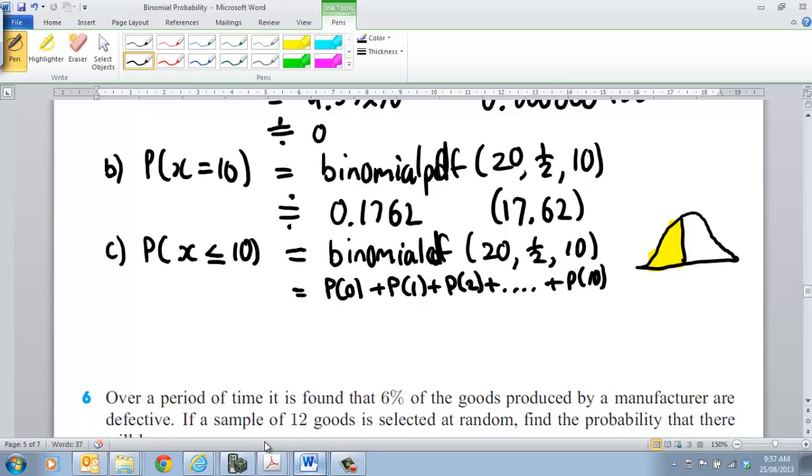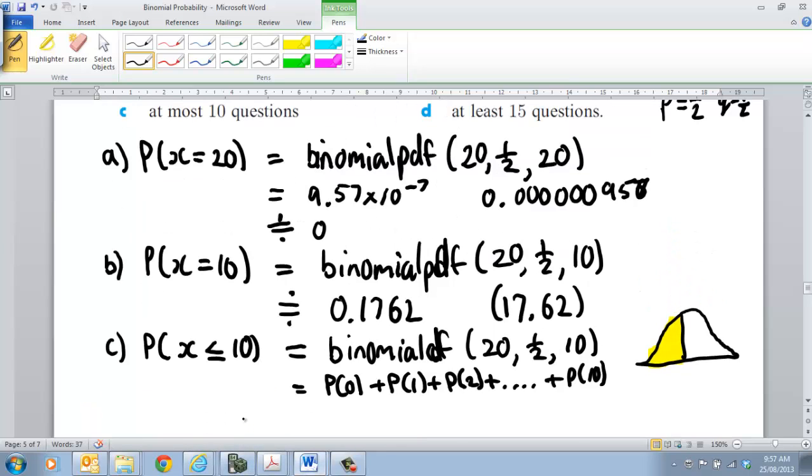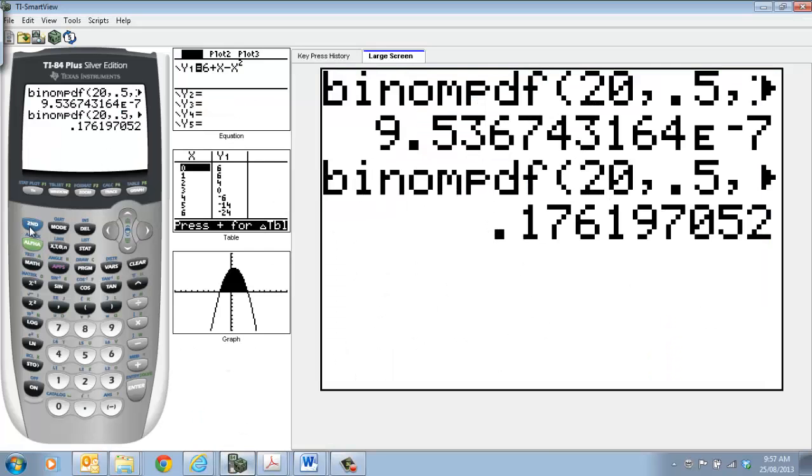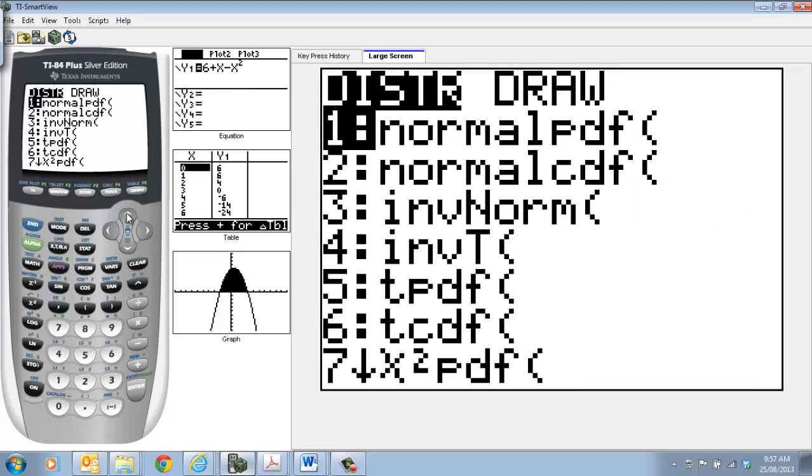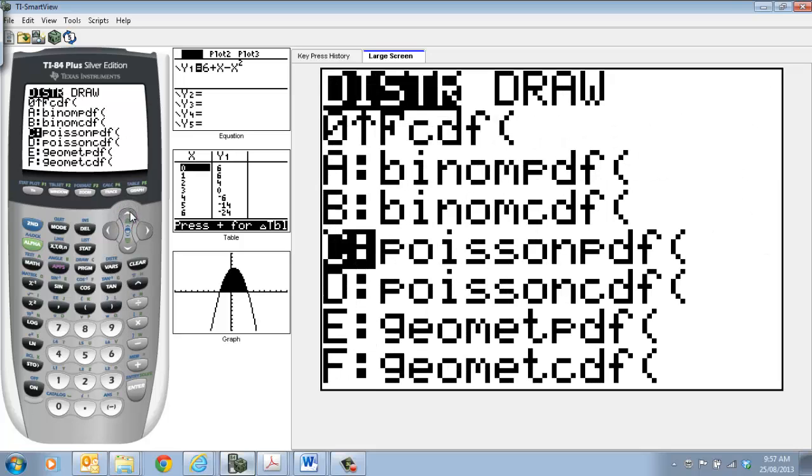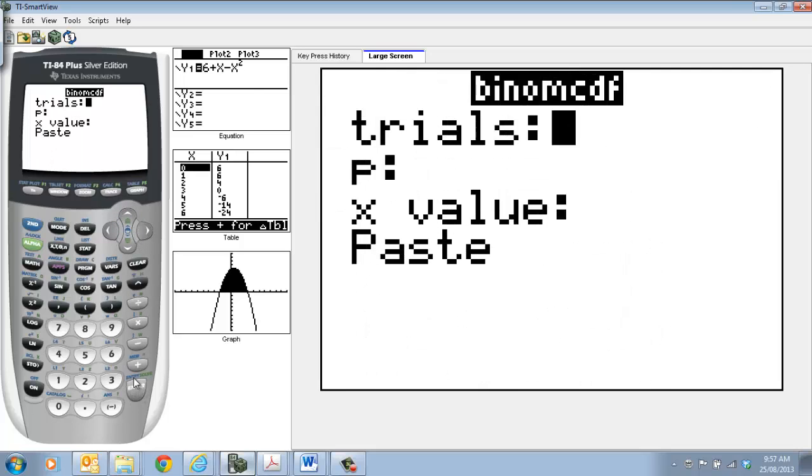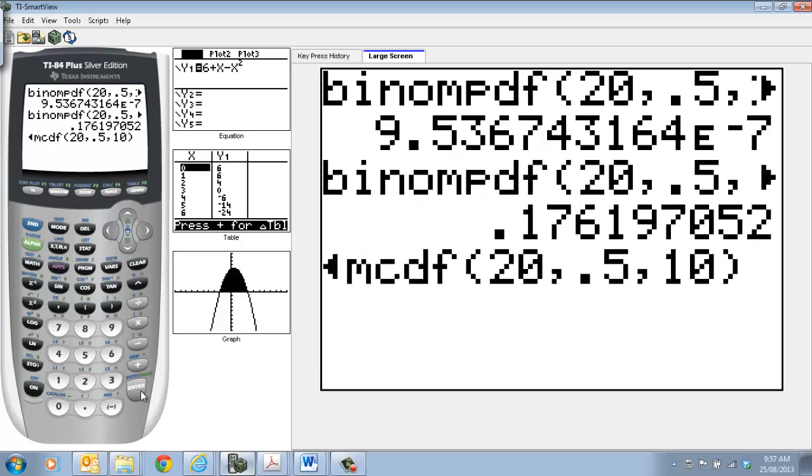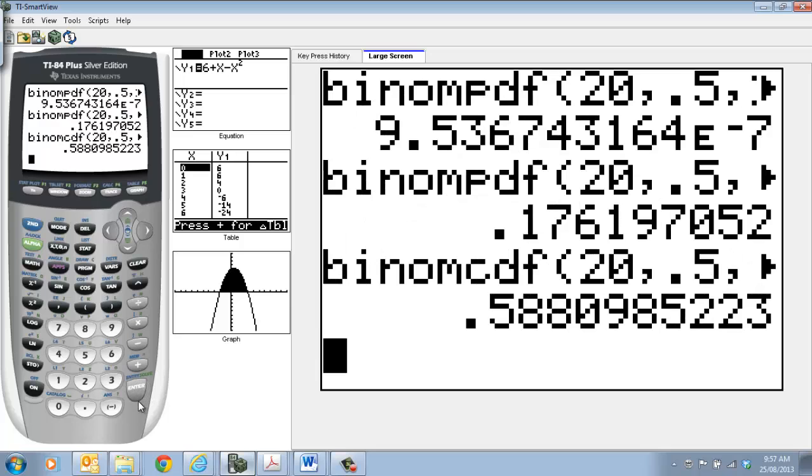So we go to our binomial probability on our calculator. We're going to distribution up arrow again. Now it's the binomial CDF we're looking at. We've got 20 trials, still got 0.5 as the chance of getting it correct, and now we've got a value of 10. As I said, we're working out 0, 1, 2, up to 10. So that's a 58.81% chance.